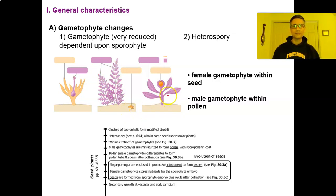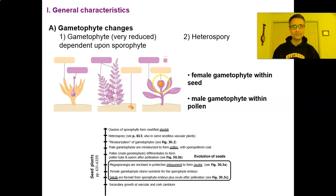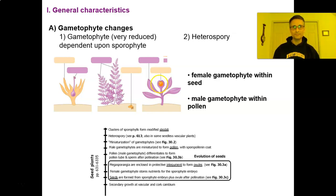Now in our third iteration, we've come full circle. Our sporophyte is not only the dominant generation — it is going to support the gametophyte. The gametophyte is going to be entirely dependent upon the sporophyte, and because it's dependent, it's very small.